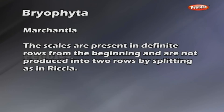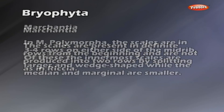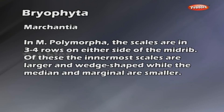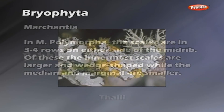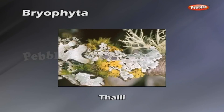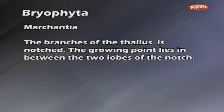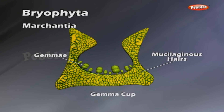The tuberculated rhizoids are narrow and sometimes form a dense tuft in the mid-ventral region. The scales are present in definite rows and in M. polymorpha are arranged in three to four rows on either side of the midrib. The innermost scales are larger and width-shaped, while the median and marginal are smaller. The thalli are conspicuous and when mature often reach a length of 10 cm. The branches of the thallus are notched, with the growing point lying between the two lobes of the notch. Along the midrib, characteristic prominent cup-shaped structures called gemma cups are present.